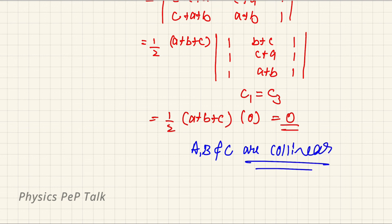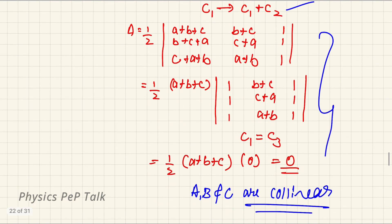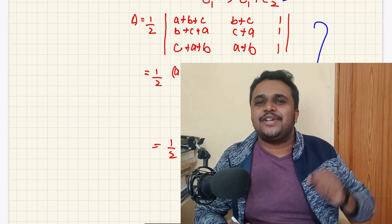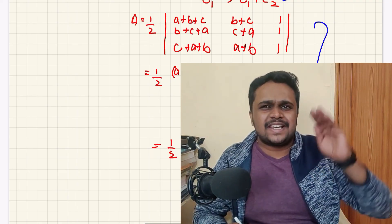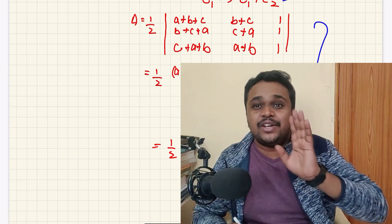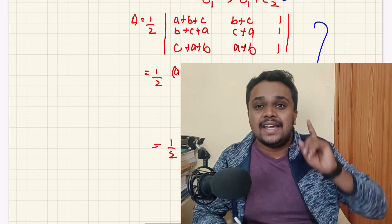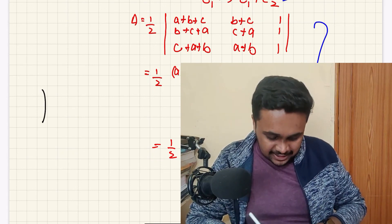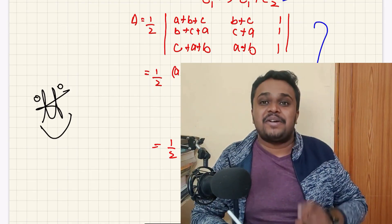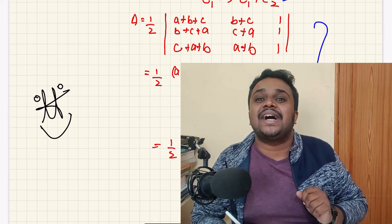So using the transformation method, the steps come out a bit faster. This way the cancellation happens quickly and we can prove it equals zero in fewer steps. This second method is easier to use in the final exam. I will meet you guys in the next video. Until then, have a nice day. Bye.